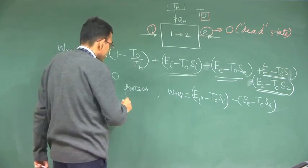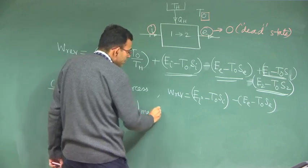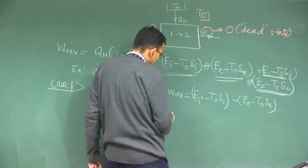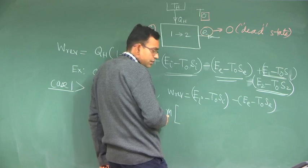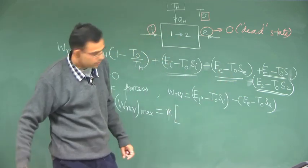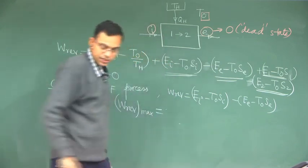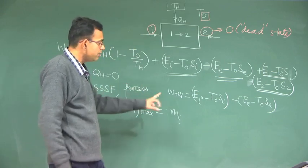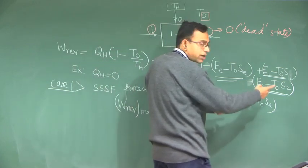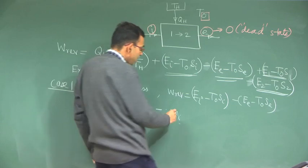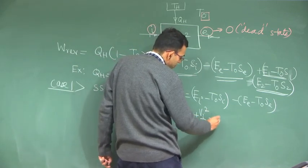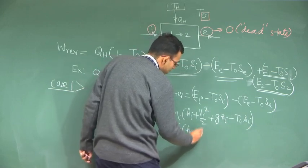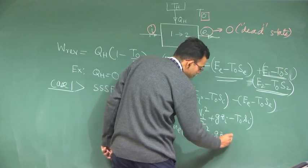W_reversible maximum — let us write the full terms. For one inlet and one exit, you have M_I into (H_I + V_I²/2 + G·Z_I − T_0·S_I) minus M_E into (H_E + V_E²/2 + G·Z_E − T_0·S_E). We can generalize this with summation if there are multiple inlets and exits.